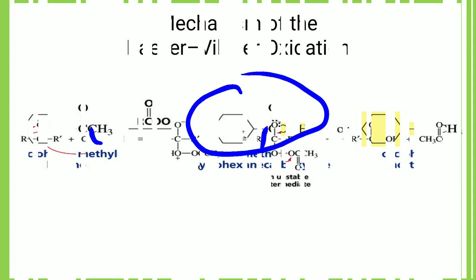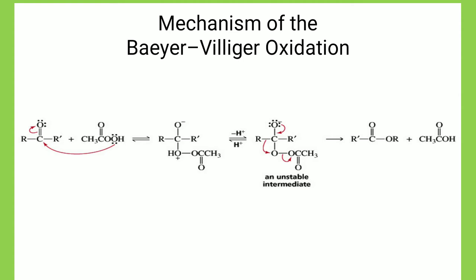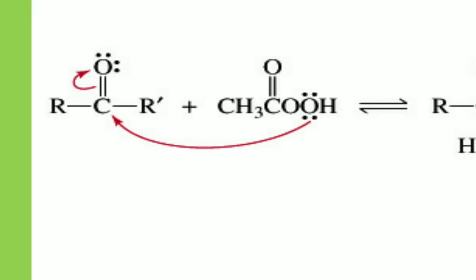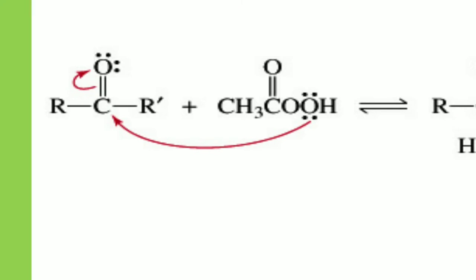Let's look at the mechanism of the Baeyer-Villiger oxidation. Mostly we use a per acid — typically MCPBA. Here the ketone reacts with the per acid CH₃CO–OOH (peracid or percarboxylic acid). The oxygen with the lone pair donates electrons to the carbonyl carbon; at the same time, the proton is abstracted by this oxygen, which becomes negatively charged. The oxygen donating electrons to the carbonyl carbon becomes positively charged.